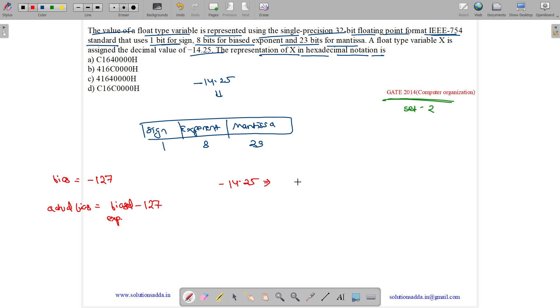So if you convert this into binary, you will get minus 1110 which is 14 plus 01. So this will be our binary representation for this. Now converting this to normal form.